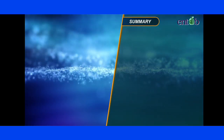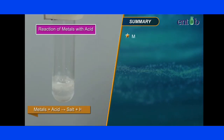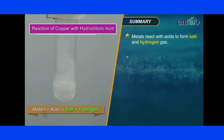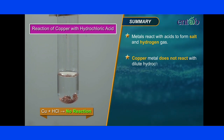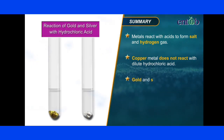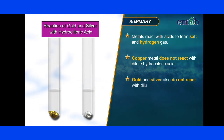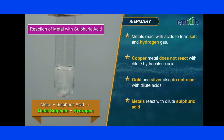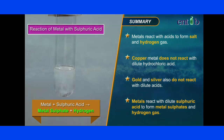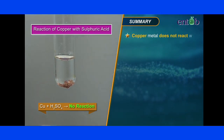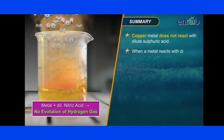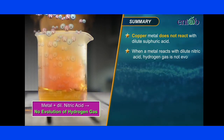Before we wind up for the day, let us quickly summarize what we have learned in this module. Metals react with acids to form salt and hydrogen gas. Copper metal does not react with dilute hydrochloric acid. Gold and silver also do not react with dilute acids. Metals react with dilute sulfuric acid to form metal sulfates and hydrogen gas. Copper does not react with dilute sulfuric acid. When a metal reacts with dilute nitric acid, hydrogen gas is not evolved.